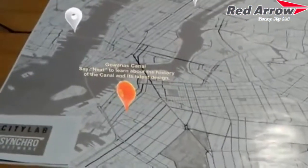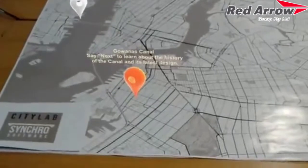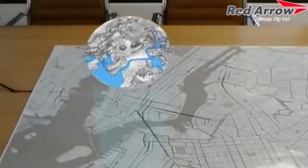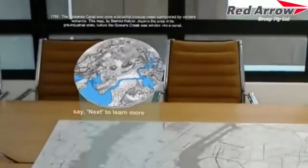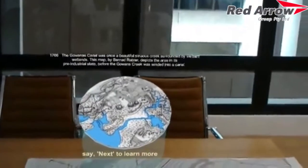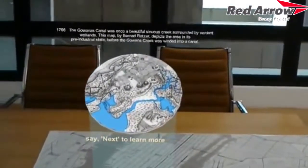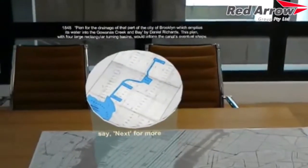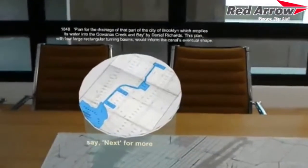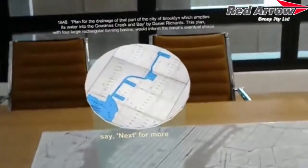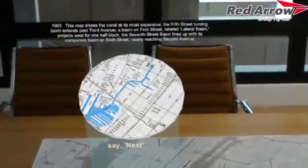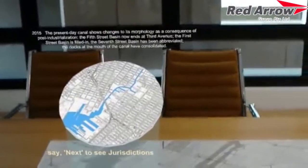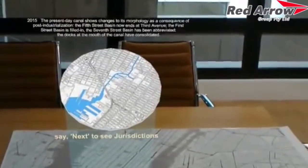We are now going to look at the canal section. This is now showing the layout of the canal system. This is the 1903 map system, and this is the present day canal system methodology.